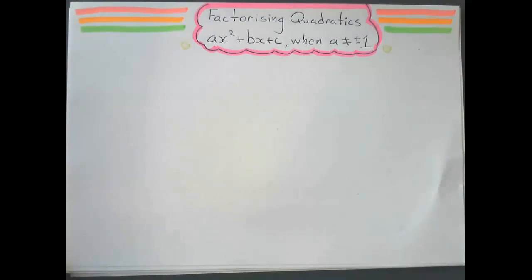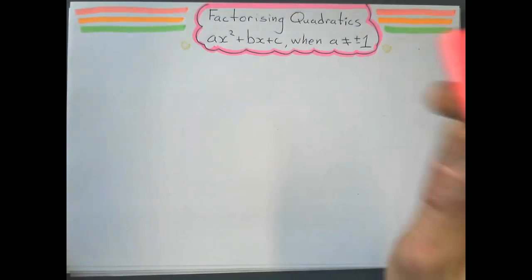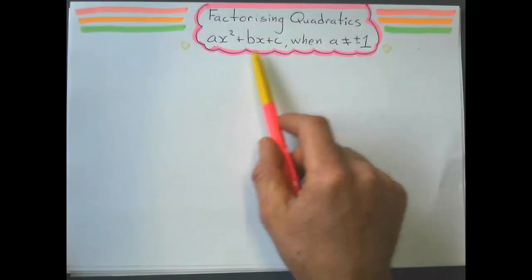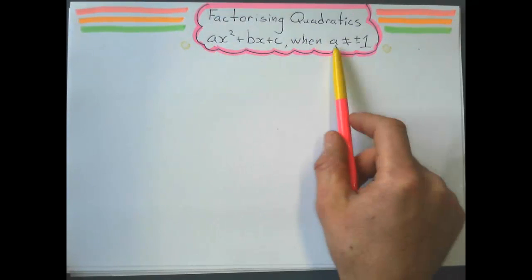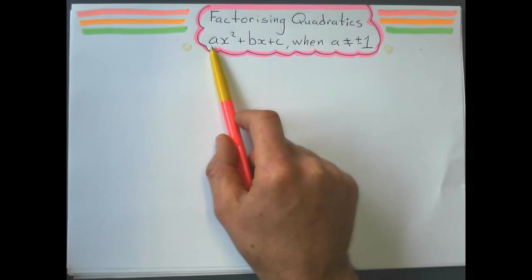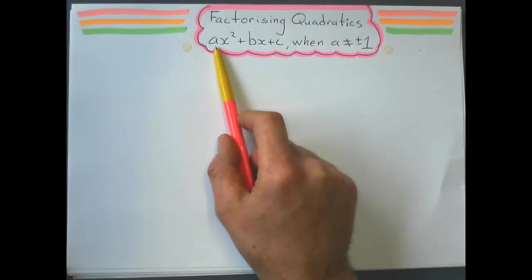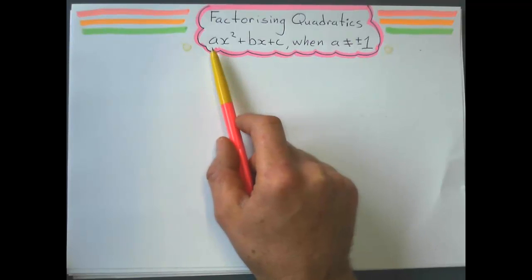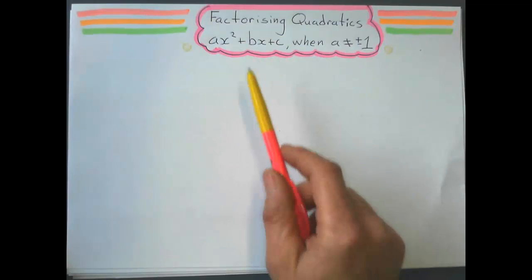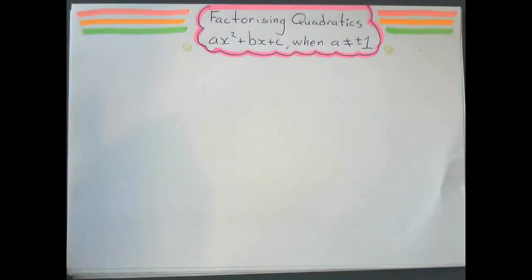Let's do this. Factorizing quadratics — what does this mean? It means when the number in front of the x squared term is not a 1, or there is a number there. Usually what we've factorized, we've factorized quadratics that look like this.